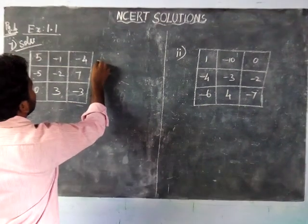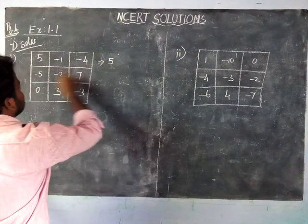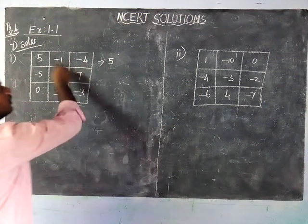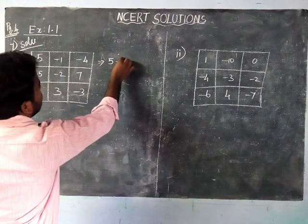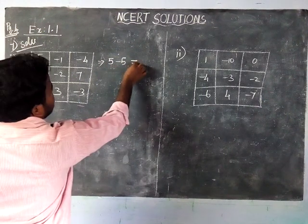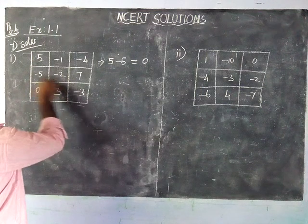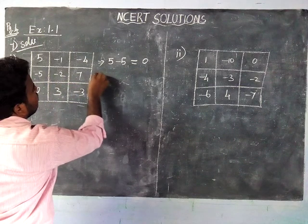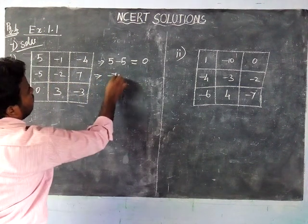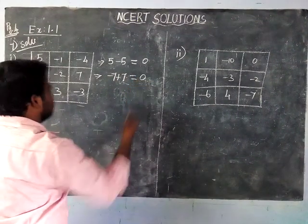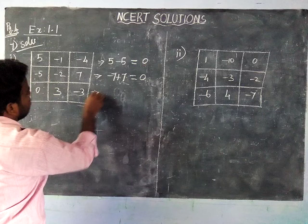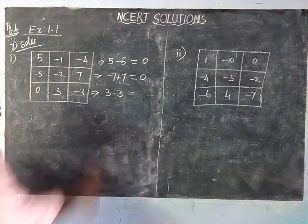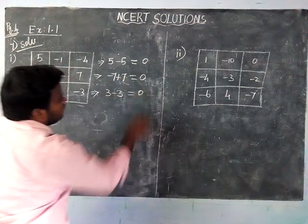Now we are going to check the first row. This is a positive number and both others are negative numbers. Adding minus one and minus four gives minus five. So plus five and minus five gives zero. Again, these two have the same sign — minus. Adding minus five and minus two gives minus seven, and this positive number plus minus seven: seven minus seven equals zero. Next, zero plus three minus three: three minus three, both have different signs, difference is zero.